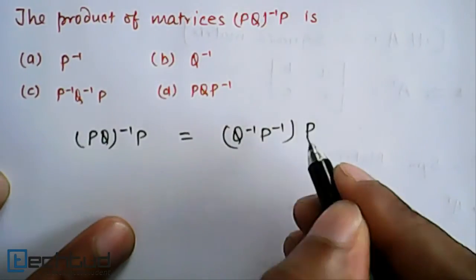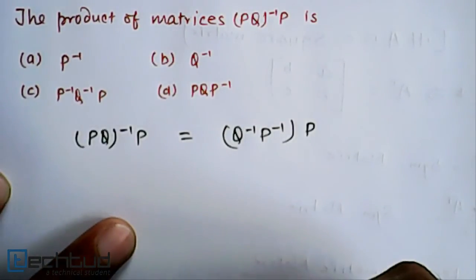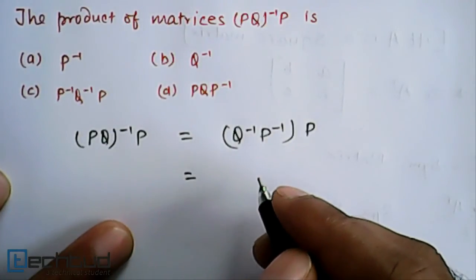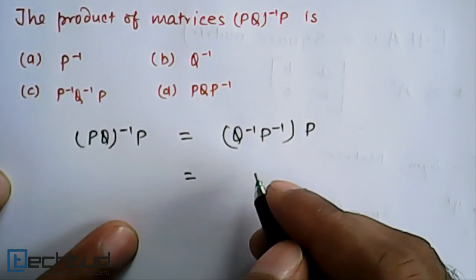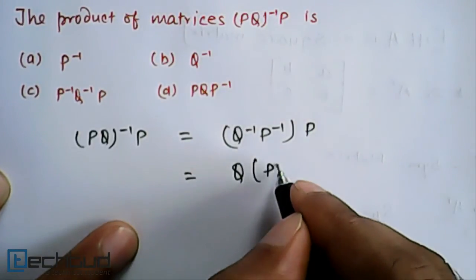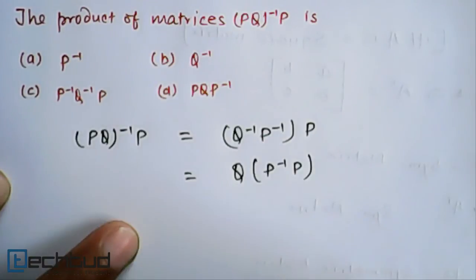And then P. Now as we know that multiplication of matrices follows associative law, so we can write Q^(-1)(P^(-1)P).